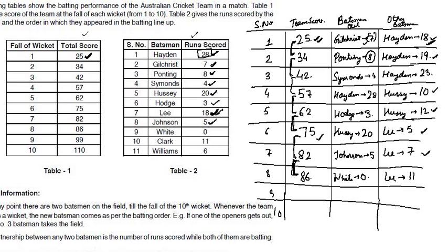The next wicket fell at the score of 99, a difference of 13. Two conditions are possible: either Lee scored 7 more runs to reach his 18 and got out, with Clark scoring the other 6; or Clark scored his 11 runs and Lee scored the other 2. Both cases are possible, and same for the 10th wicket — it depends on whether Lee or Clark got out at the 9th position. Let's move to the questions.